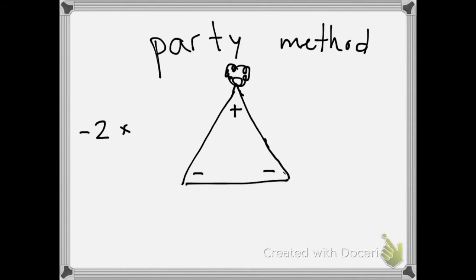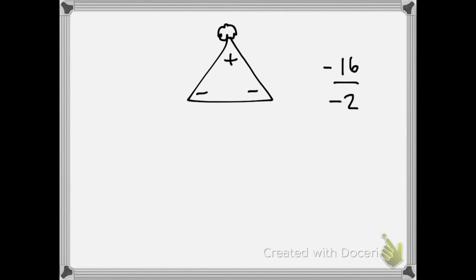Let's take a situation like negative two times positive four. You'll cover up the negative and the positive on the party hat, giving us eight as our result. Since the leftover sign is negative, the answer is negative eight. Let's look at another one with division: negative 16 divided by negative two. We cover up both negatives, and already I can tell my answer has got to be a positive. 16 divided by 2 is simply 8, so the answer is positive 8. Kids can write the party hat right down on their paper, test, or quiz because it's a good resource.